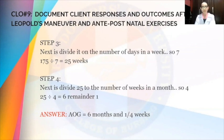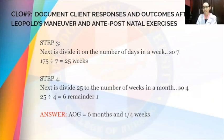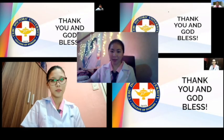In step 4, we divide our new answer by the number of weeks in a month, which is 4. So 25 divided by 4 equals 6 with a remainder of 1. In conclusion, our age of gestation or AOG is 6 months and 1 over 4 weeks. That ends the discussion regarding this topic. This has been Group 1 — thank you and God bless.